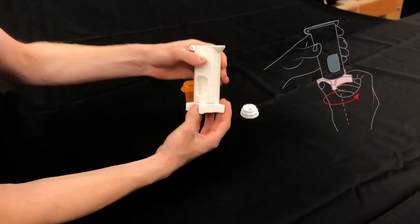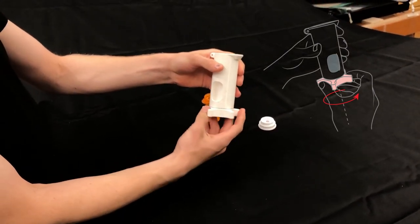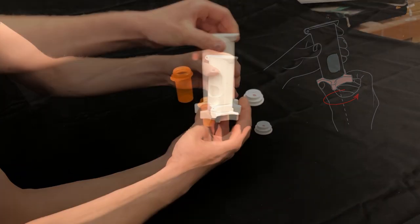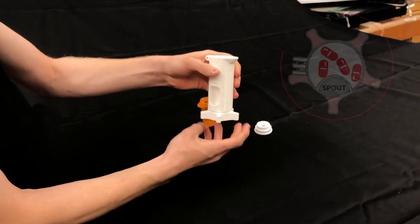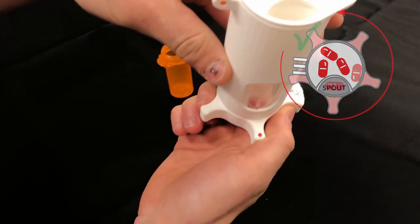To dispense a pill, the main body of the pill dispenser should be held in one hand with the other hand holding the twisting base. The base should be rotated 360 degrees or until the pocket in the twist base lines up with the spout.